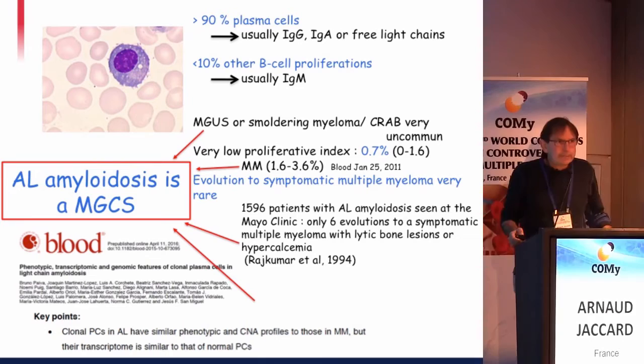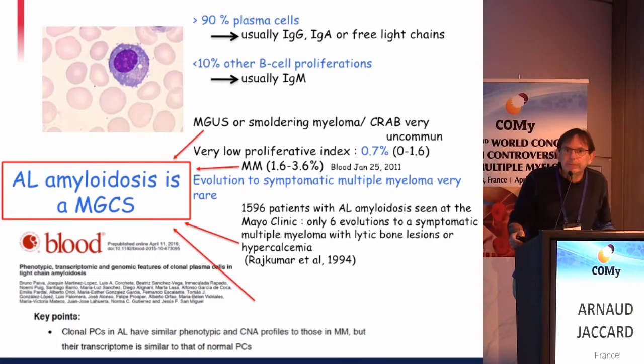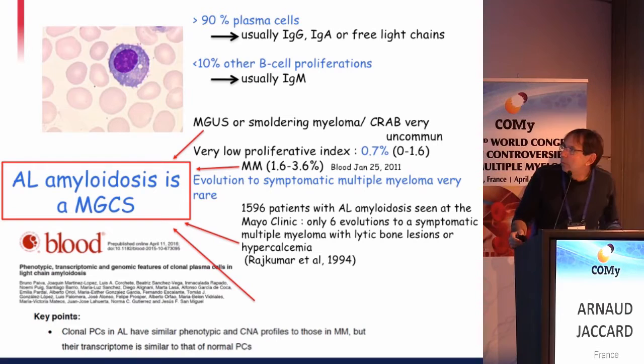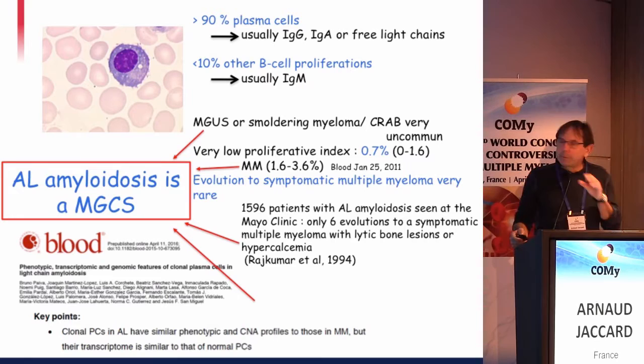Looking at the clonal cells, it's mainly plasma cells. Usually you have an IgG or free light chain only in about 50 percent of patients, and in less than 10 percent other B-cell proliferation with an IgM. Importantly, the patient usually has an MGUS or a small ring myeloma; crab criteria are very uncommon, there is a very low proliferative index, and evolution to symptomatic multiple myeloma is very rare.